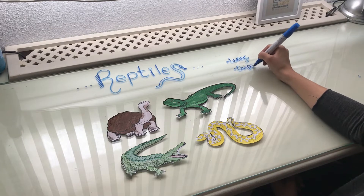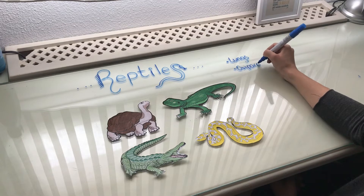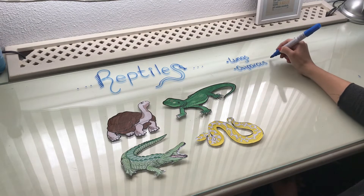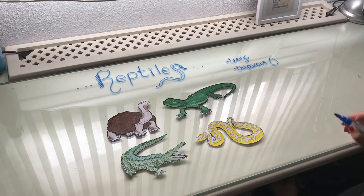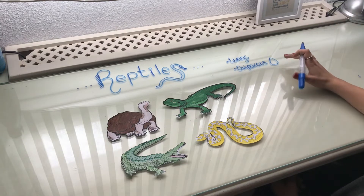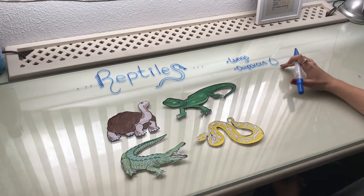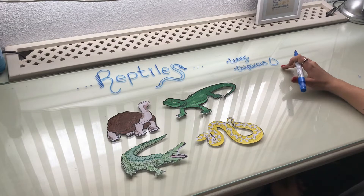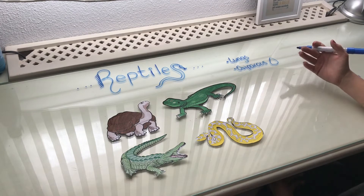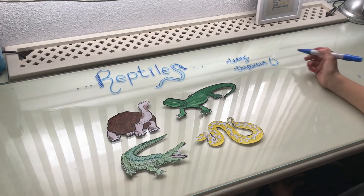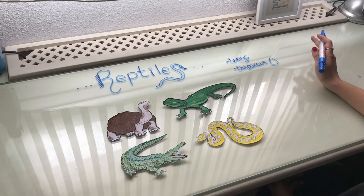If you remember what oviparous means, oviparous animals are those that lay eggs. Reptiles lay their eggs on land, which means they don't need water to develop — they just need to be on land.